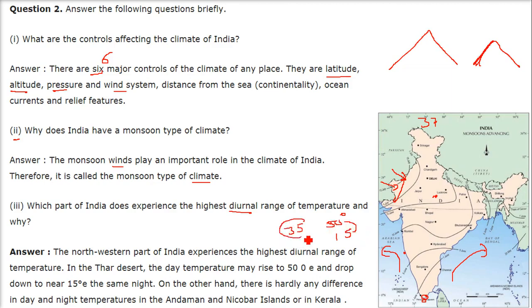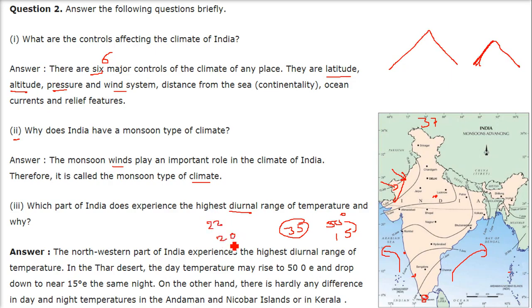On the other hand, if you are in Kerala or the Andaman and Nicobar Islands, there is hardly any difference in temperature. In the day it may be 22 degrees, in the evening it may be 20 degrees — the diurnal difference is quite low.